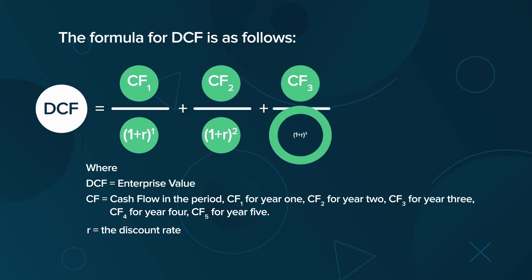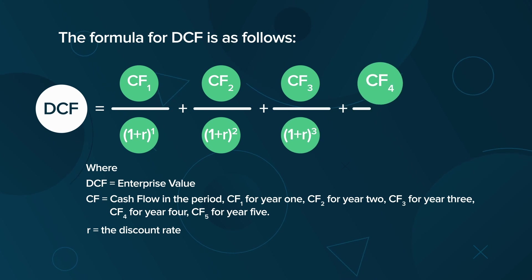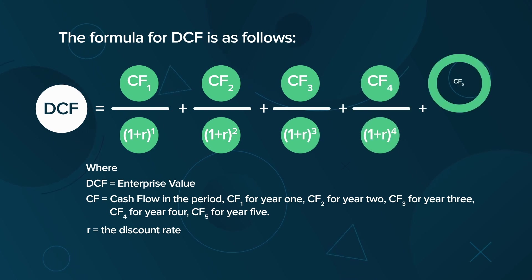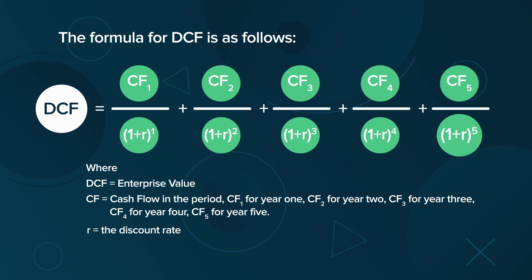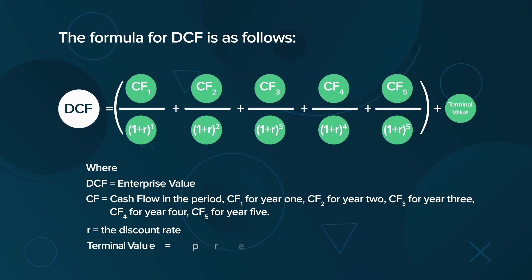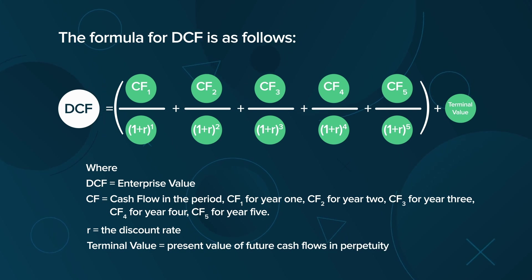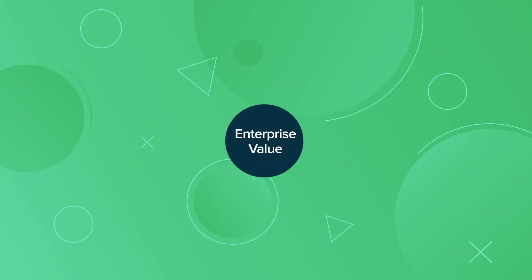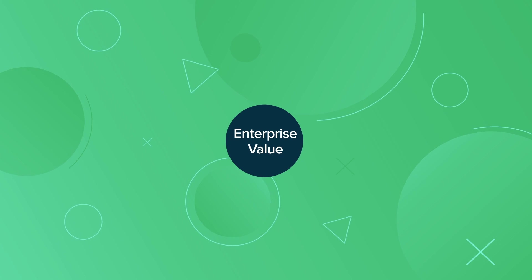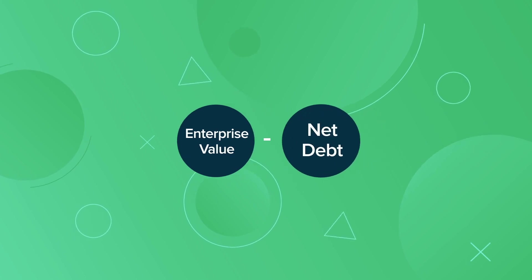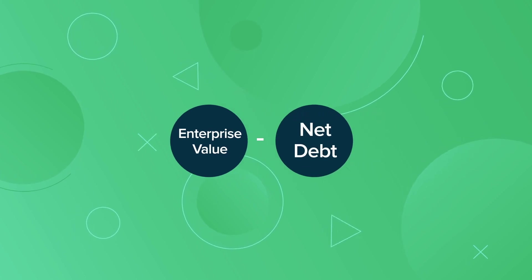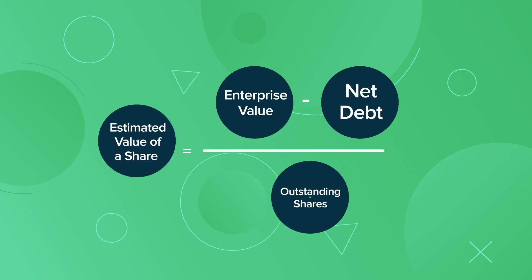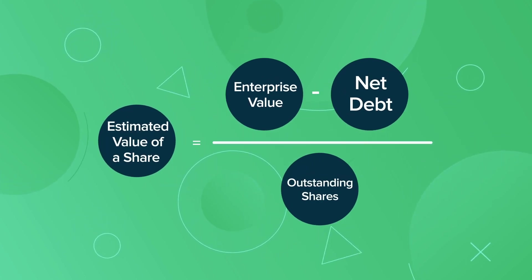Continue this sequence using a detailed forecast for five years, then add a terminal value — this is the present value of future cash flows in perpetuity. Once you have the enterprise value, subtract the net debt of the company and divide by the number of outstanding shares.